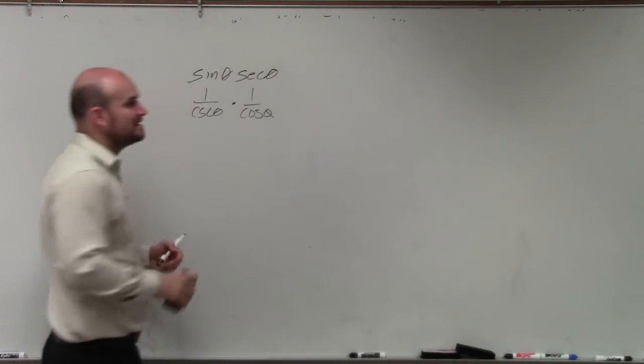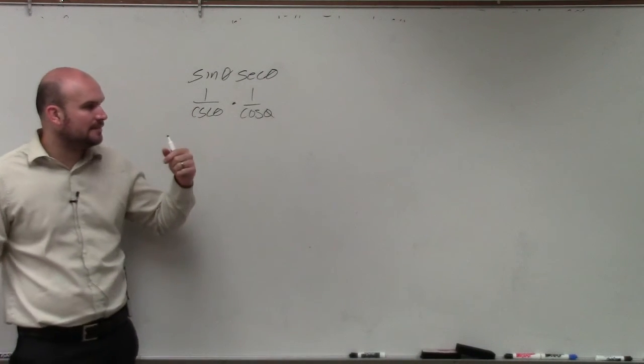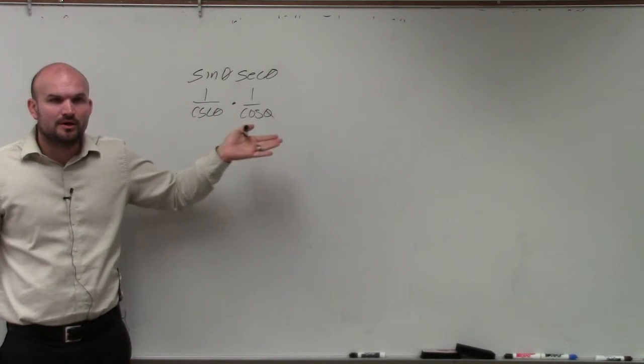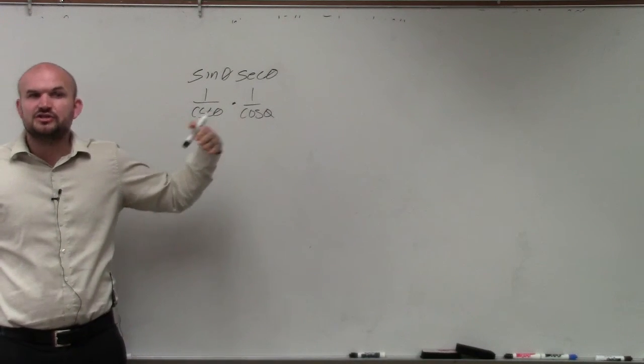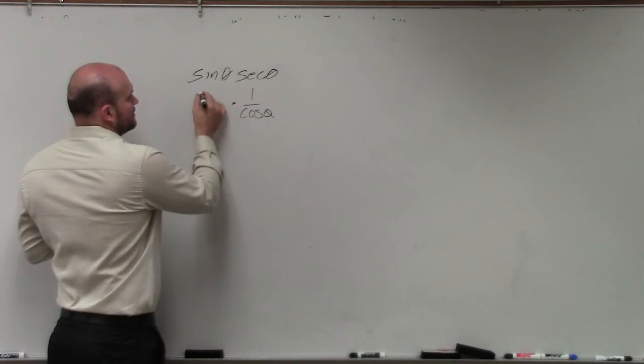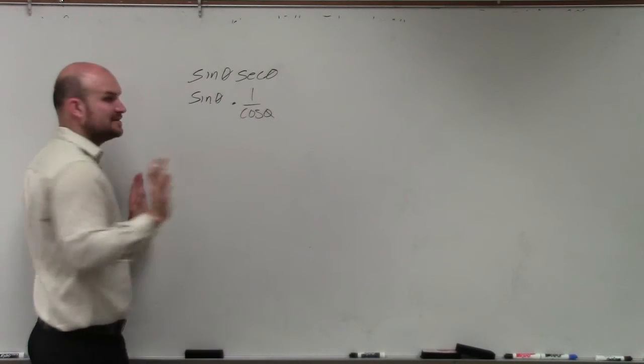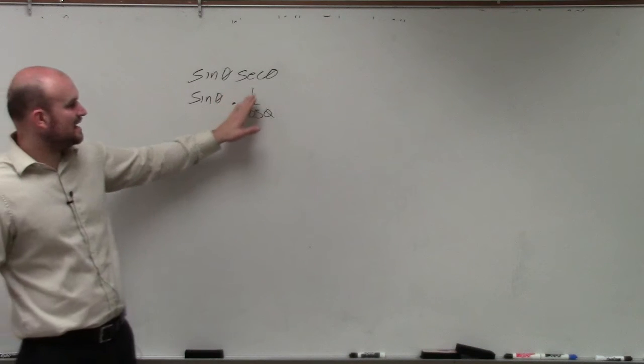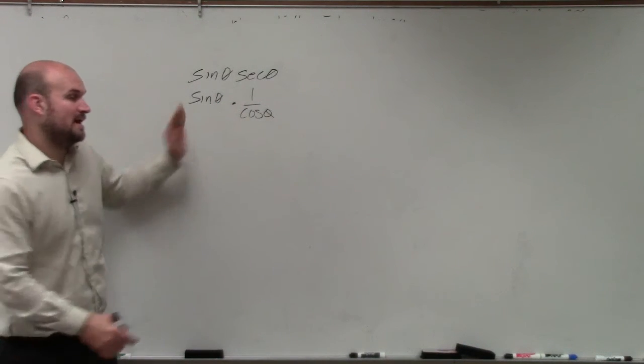So then I want to see, well, rather than converting both of them, what would happen if I just maybe changed one of them? So what about this? What if I just left sine as it was, and I just multiplied by sine times one over cosine? Well, when I multiply those, I get sine of theta over cosine of theta.